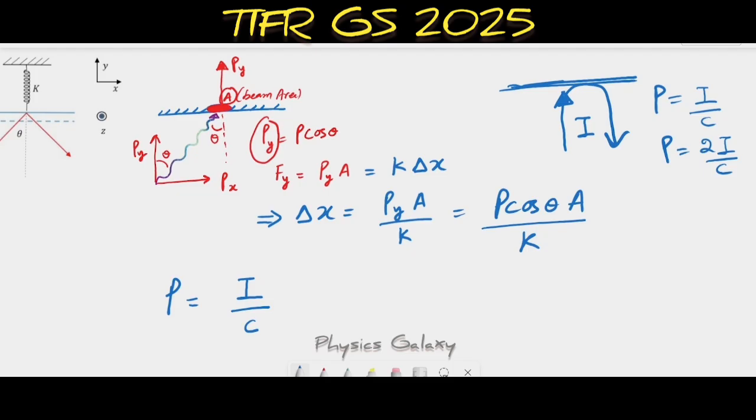The pressure here will be two times because it is being reflected. So Δx equals A cos θ by K. In terms of pressure, I will write twice I by c.